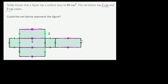They don't ask us to do this in the problem, but it's always fun to start with a net and try to visualize the polyhedron it represents. It looks pretty clear this is going to be a rectangular prism. So we're going to fold this in, fold this that way — this will be our base. We'll fold this in, fold that up, and this is going to be our top.